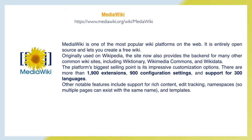MediaWiki is one of the most popular wiki platforms on the web. It is entirely open source and lets you create a free wiki. Originally used on Wikipedia, it now also provides the backend for many other common wiki sites, including Wiktionary, Wikimedia Commons, and Wikidata. The platform's biggest selling point is its impressive customization options — more than 1,900 extensions, 900 configuration settings, and support for 300 languages. Other notable features include rich content support, edit tracking, namespaces so multiple pages can exist with the same name, and templates.